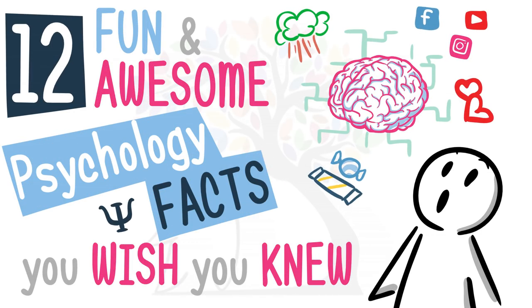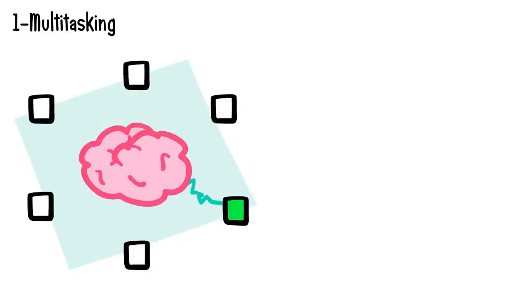12 fun and awesome psychology facts you wish you knew. Fact number one: multitasking. Did you know you can't multitask? According to science, your brain can only focus on one thing. It might seem like you are multitasking, but the truth is your brain is shifting its focus quickly.